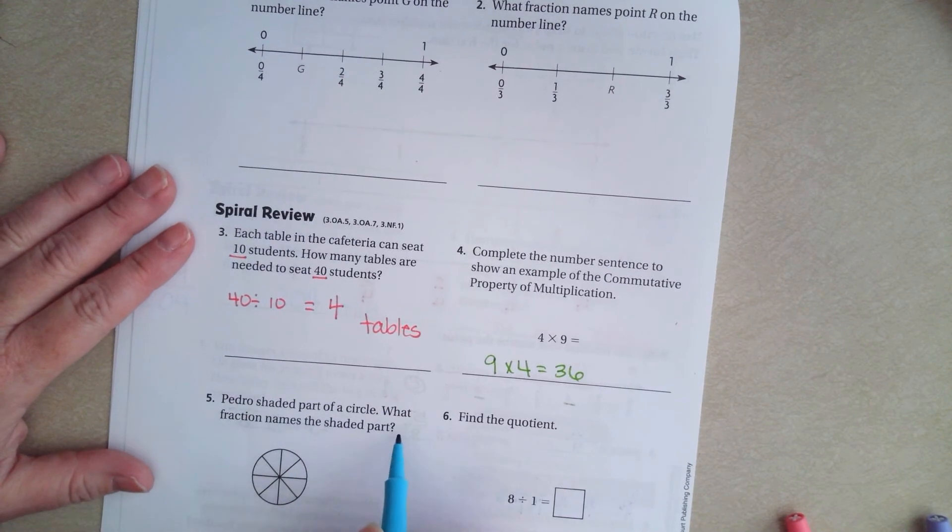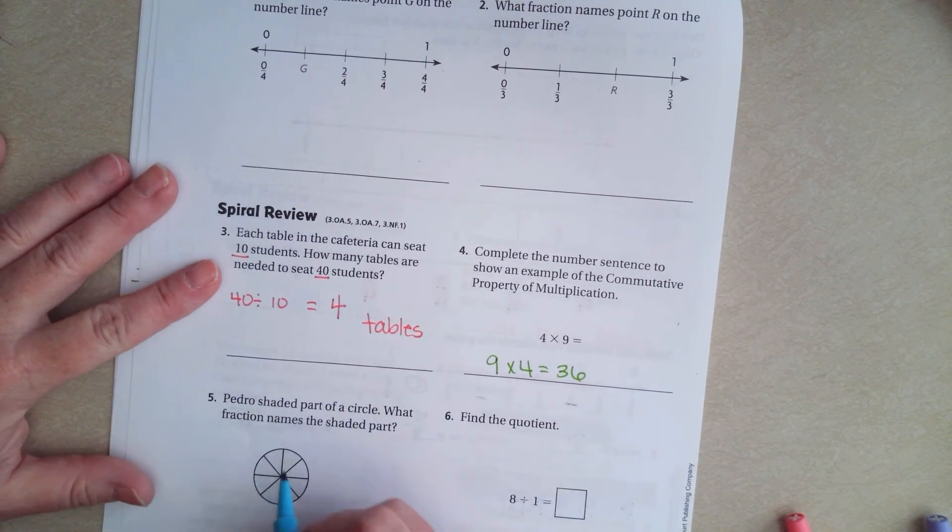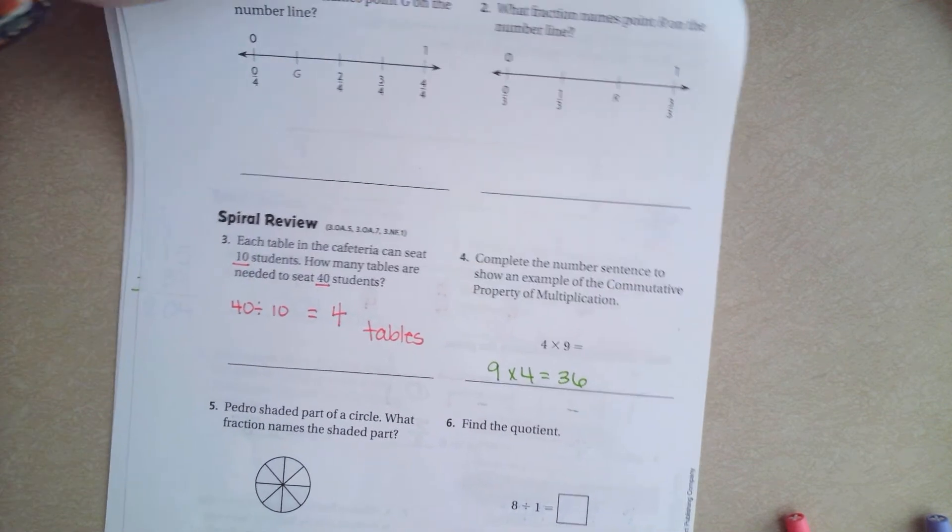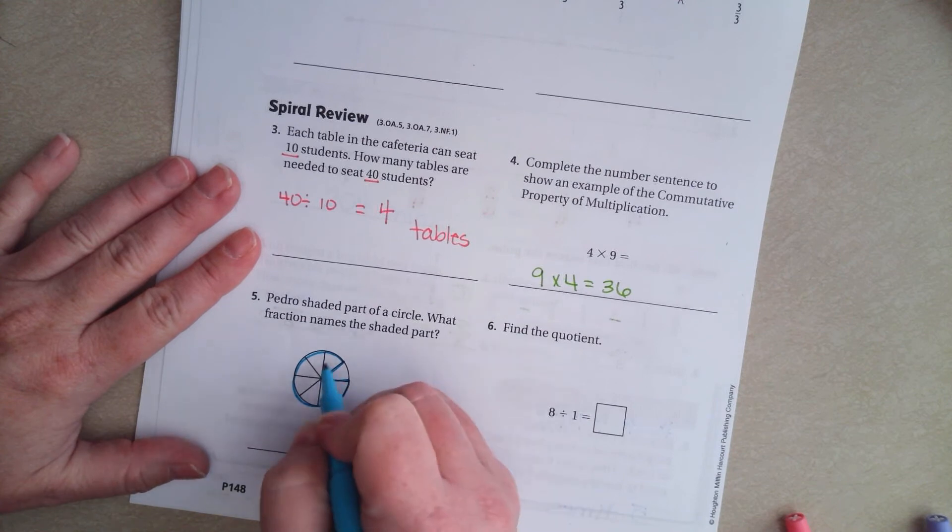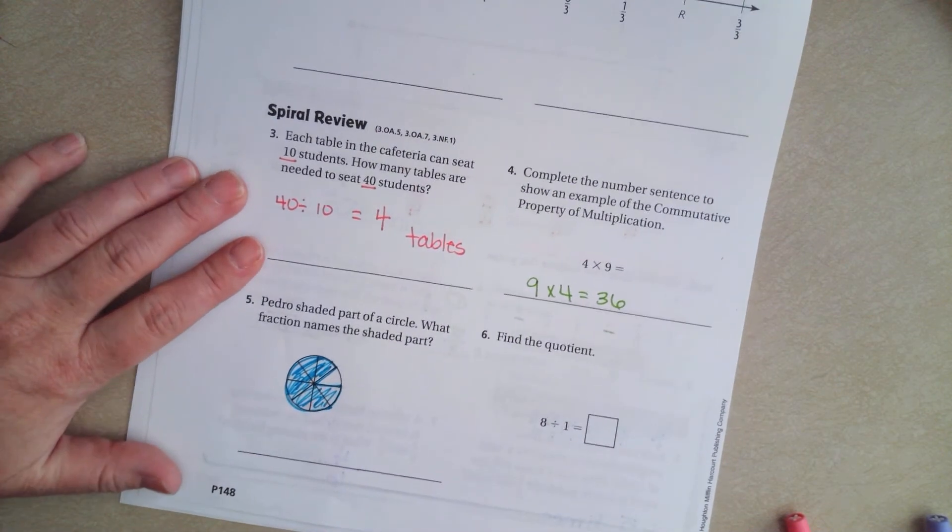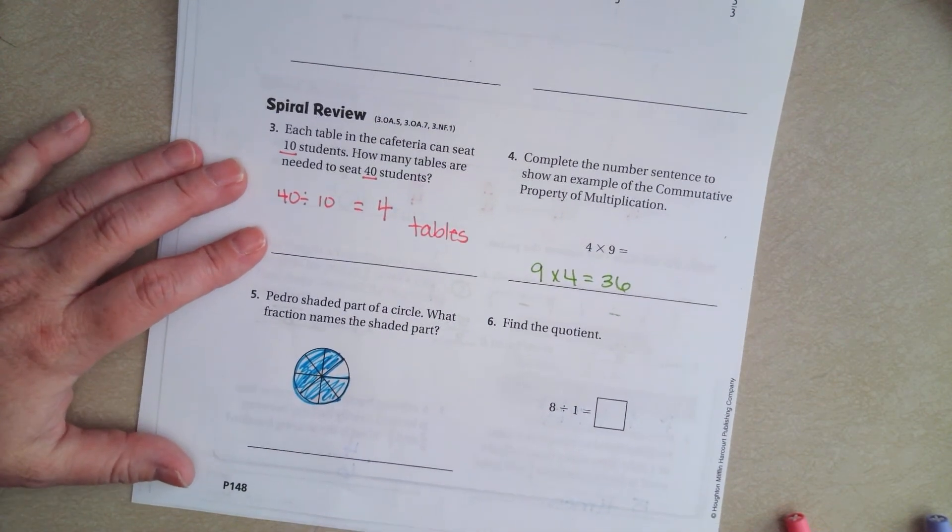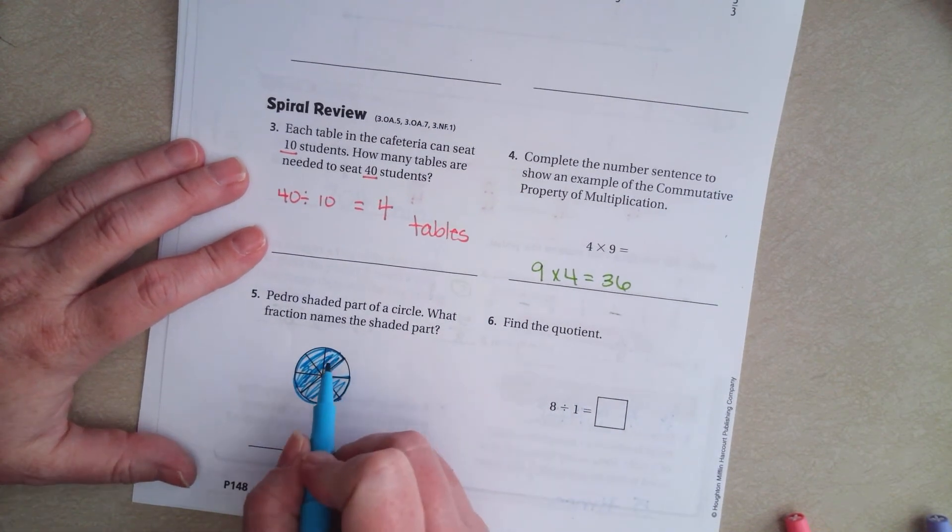Pedro shaded part of a circle. I know that it's really tough for you guys to see this. So, I'm going to go ahead and color this in. So, it's really tough for you guys to see that because I have a photocopy.